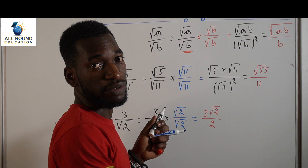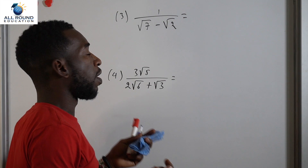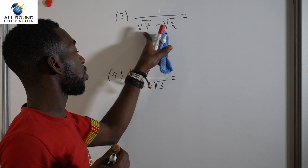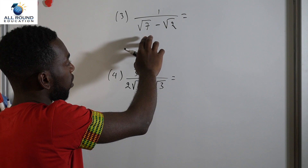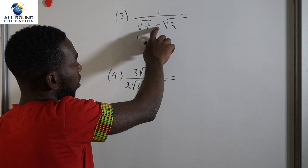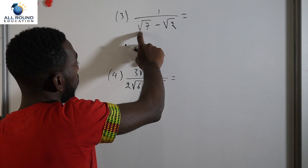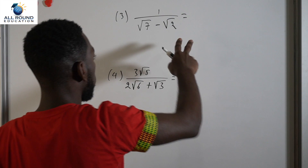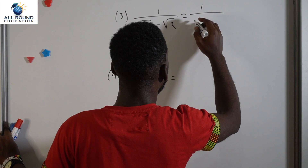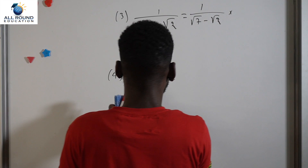Those were two basic ones. Let's look at the harder ones. In this case, we are trying to use conjugates. To rationalize this, we have to multiply this expression by its conjugate. The way you find the conjugate is you use the opposite sign of the sign you're given. In this case, we have a negative, but we're going to use the positive. So we keep root 7 minus root 2 and multiply by root 7 plus root 2 over root 7 plus root 2.